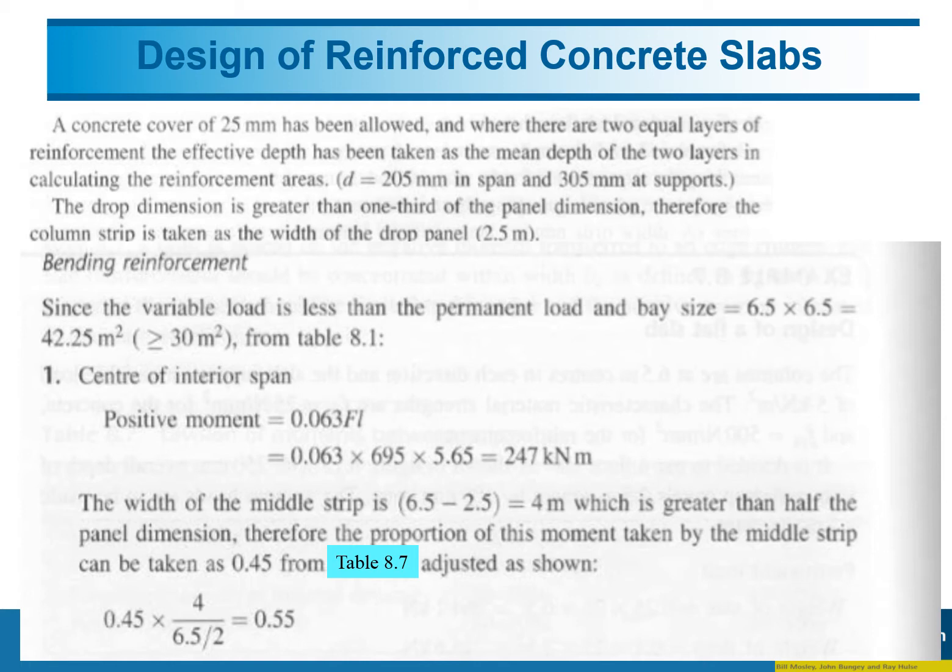For the center of interior span positive moment, you can refer to reinforced concrete design principles. For the continuous slab, the positive moment has this coefficient: 0.063FL, where F is the point load and L is the effective span that we already discussed. Using 0.063 multiplied by F multiplied by L, we have 247 kN·m. This positive moment acts at the middle, and we need to distribute this moment between the middle span and the supports.